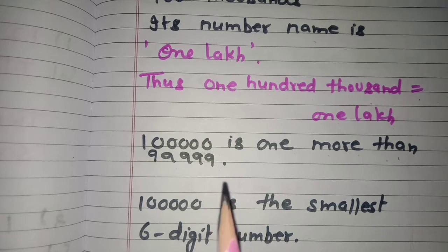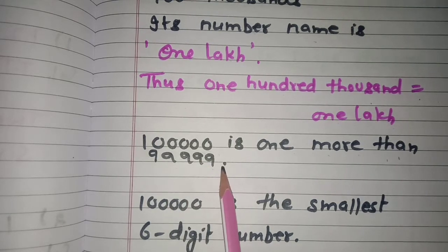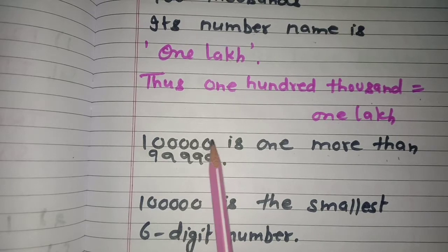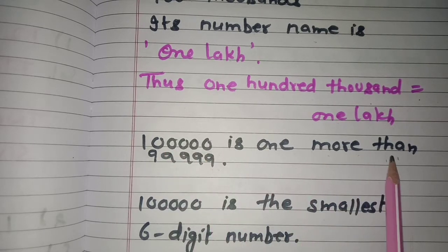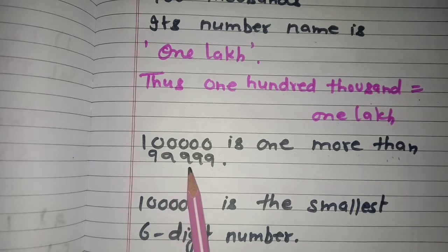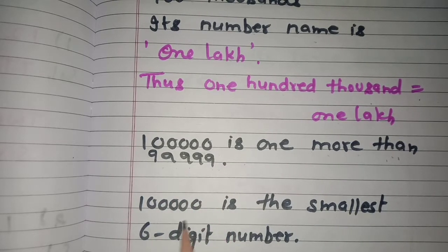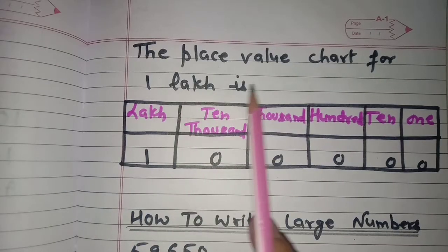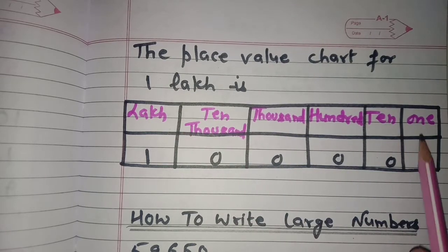One lakh is one more than ninety nine thousand nine hundred and ninety nine, because when we add one to the largest five digit number we get the smallest six digit number. That is why one lakh is the smallest six digit number.